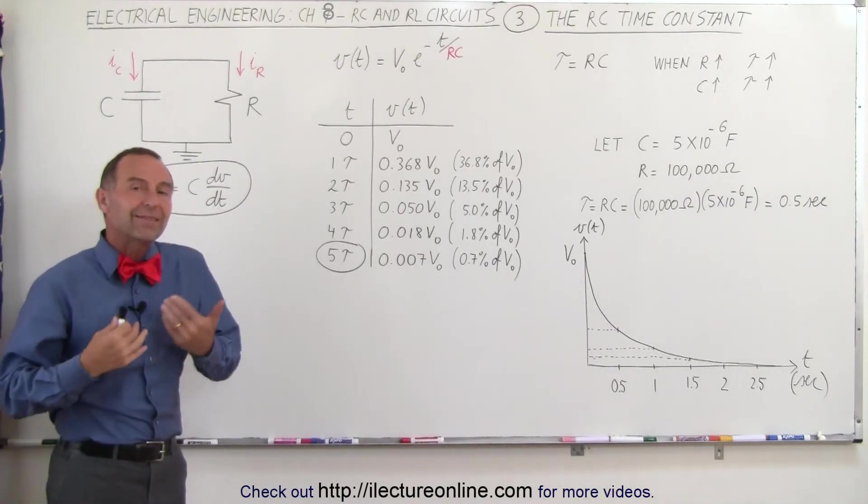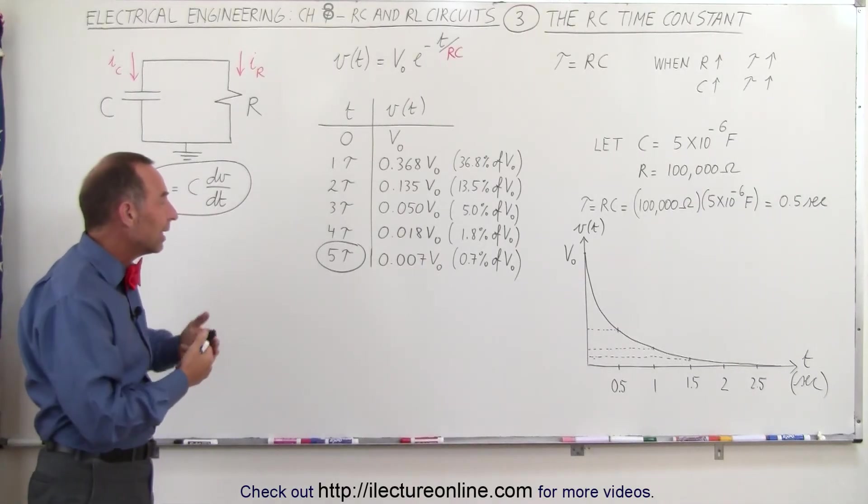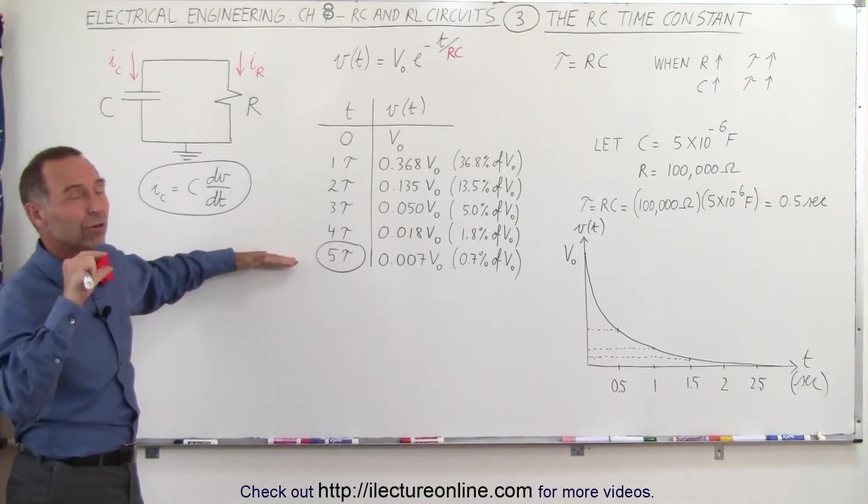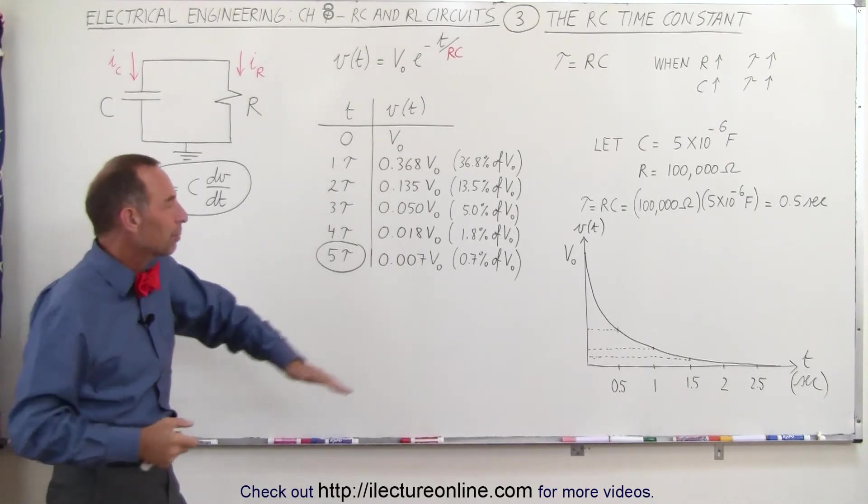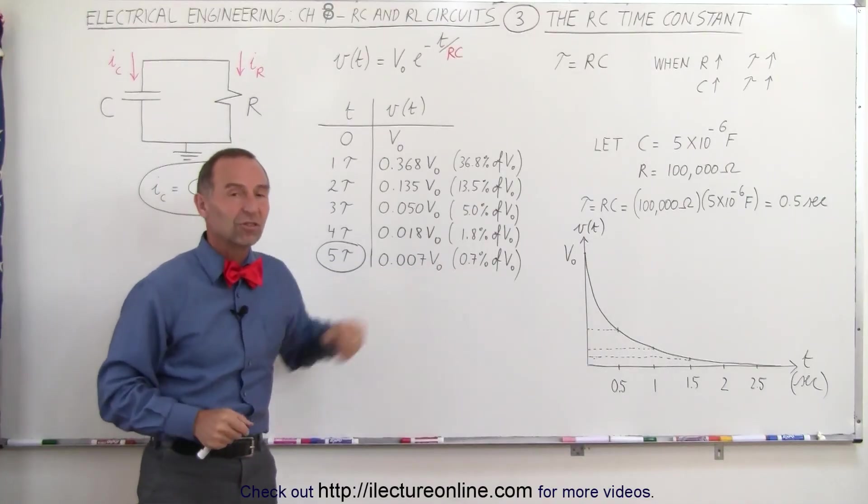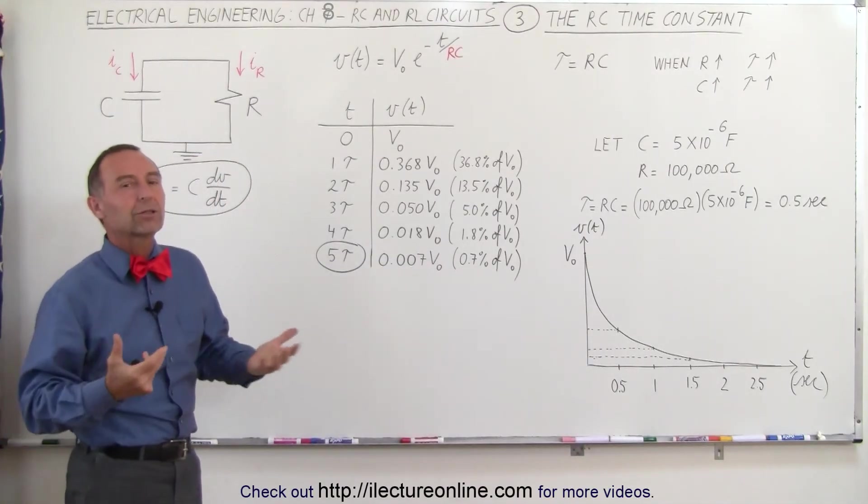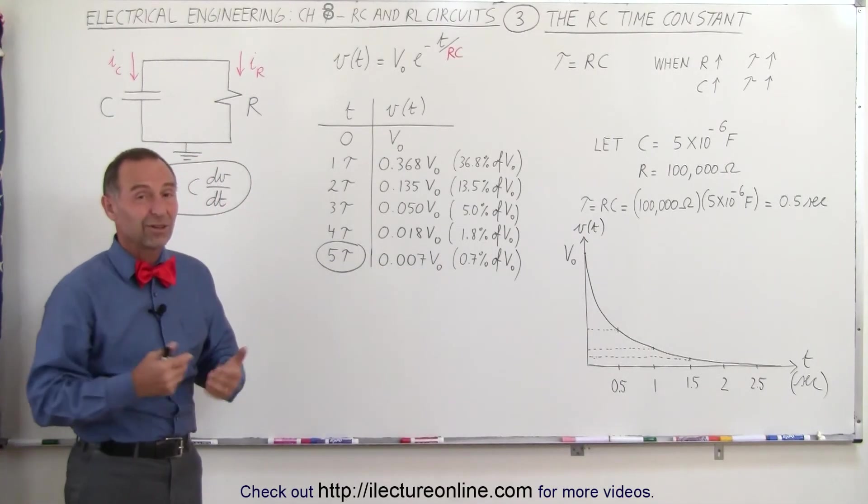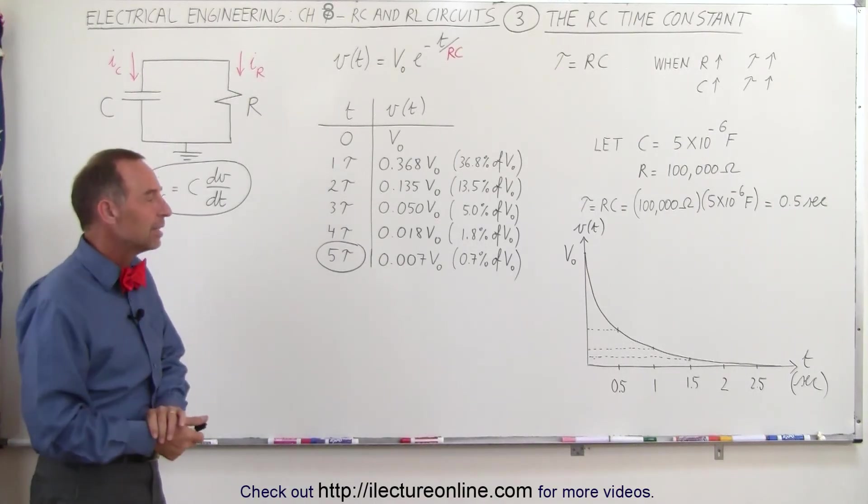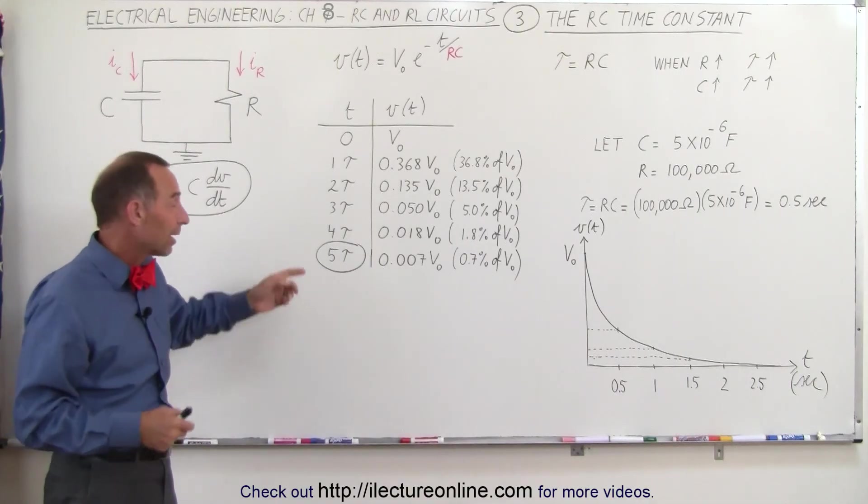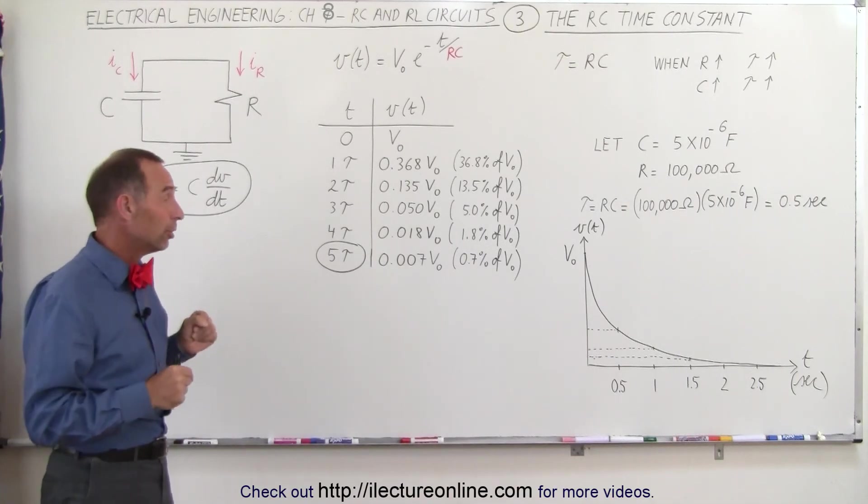And so therefore, we typically say in electronics that after five time constants, the voltage across the capacitor is essentially gone to zero, because we know at that point, it's less than 1% of its initial value. And in all practical purposes, that would be considered close to zero, close enough to be considered zero, or the capacitor is fully discharged. So that's why the concept of five time constants is important.